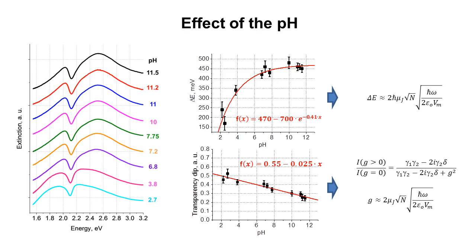Moreover, the Rabi splitting values change only slightly in the basic range of pH. Hence, the induced transparency phenomenon can be used for pH sensing in this range. In contrast, if the medium is acidic, the Rabi splitting value strongly depends on the pH, but the induced transparency dip value exhibits a large scatter.